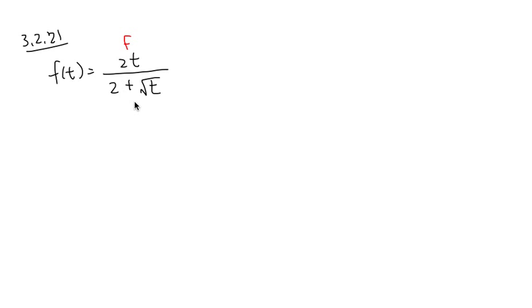Let me label the top as the red f and the bottom as the red g. For quotient rule, we are going to write down the g first, which is going to be 2 plus square root of t. And the function f is going to be 2t.